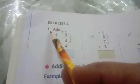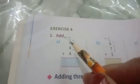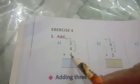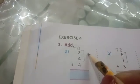Exercise 4, Question 1. Add. 2 plus 4 plus 4. Children, first we will add 2 and 4, the first two digits. 2 plus 4 equals 6.